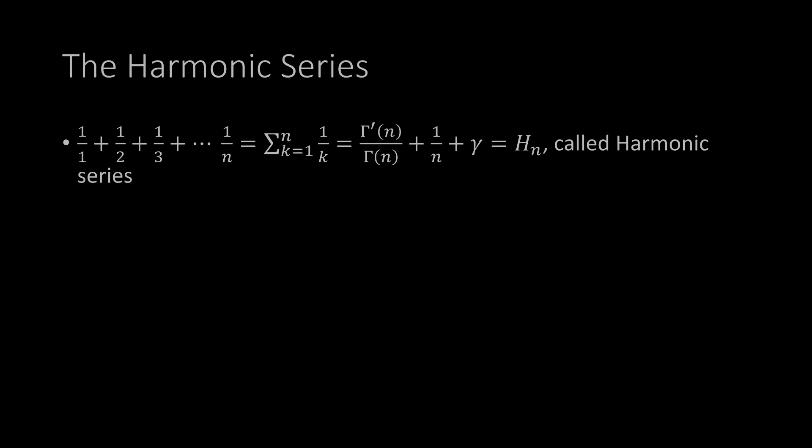This leads us to the harmonic series — the next math video on this channel will go into full depth. For this video you just need to know, without proof, that the sum 1/1 + 1/2 + 1/3 + ... + 1/n — the sum of inverse natural numbers — is called the harmonic series, and there is a short-form expression for it: it equals the derivative of the gamma function at n, divided by the gamma function at n, plus 1/n, plus the Euler–Mascheroni constant γ. This is called the harmonic number H_n.